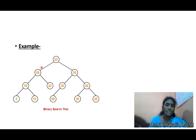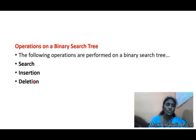Searching is very efficient in a binary search tree. For example, if you want to find element 10, first compare it to the root element. If it is lesser, go to the left subtree. This makes searching very efficient in a binary search tree.